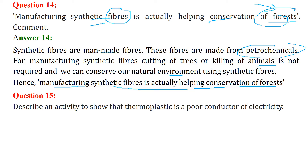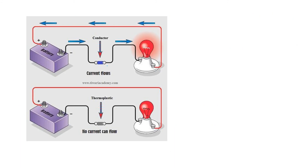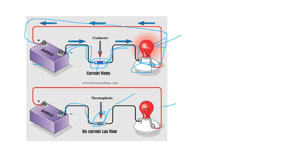Describe an activity to show that thermoplastic is a poor conductor of electricity. Consider a circuit with a battery, a bulb, and a conductor. When a conductor is placed in the circuit, current flows and the bulb glows. But when a thermoplastic is placed in the circuit instead, the bulb does not glow because thermoplastic is a poor conductor of electricity and the circuit does not complete.